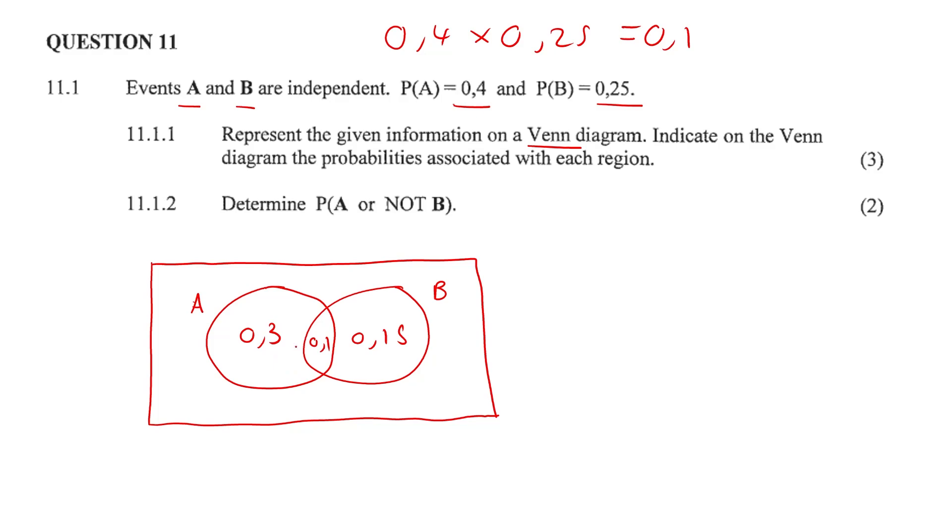So 0.3 plus 0.1 plus 0.15, that is going to give us 0.55. What happened to the other 0.45? Because the probability of anything occurring is always a maximum of 1 or 100%. Well, that is the probability of it not occurring, and that is going to be outside the circle: 0.45.